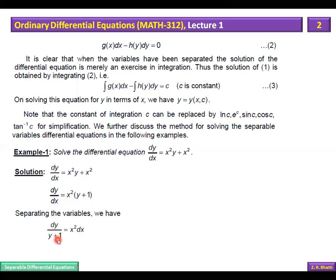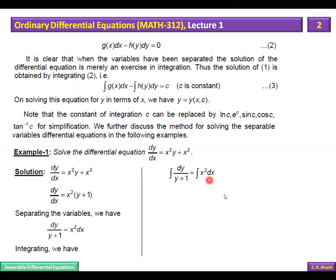Now we write dy/(y+1) = x² dx. We integrate the left hand side with respect to y and the right hand side with respect to x. The left hand side gives the integration of 1/(y+1), and the right hand side integrates x² to give x³/3 plus a constant of integration.